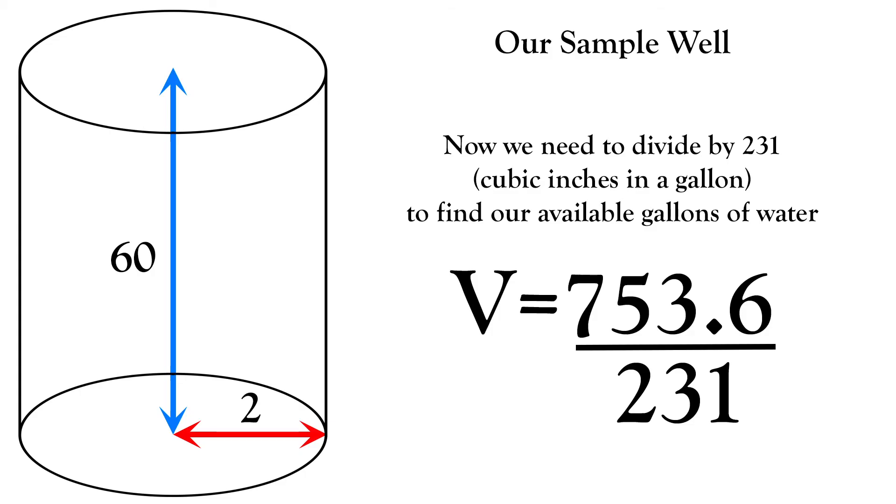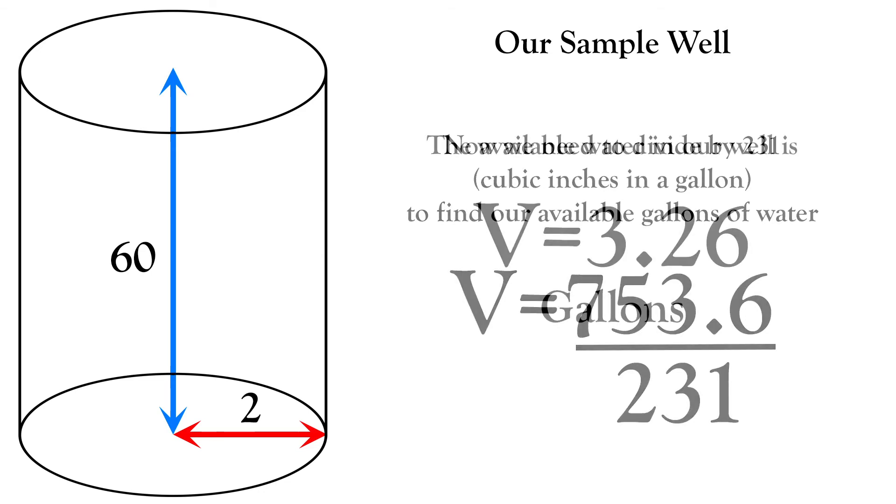So now we bring in our value of cubic inches in a gallon, which is 231. We'll divide our cubic inch value of our well by this number to find our gallons. And this gives us our available water or static head amount of 3.26 gallons of water.